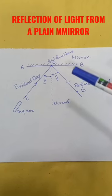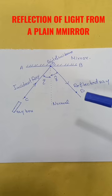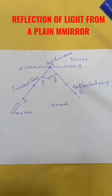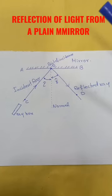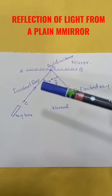CO is the incident ray, OD is the reflected ray. This dotted line is the normal because it makes a 90-degree angle with the surface of the mirror. The angle between the incident ray and the normal is called the angle of incidence.